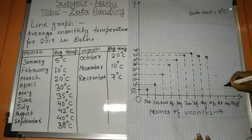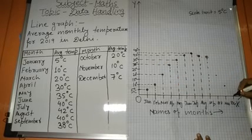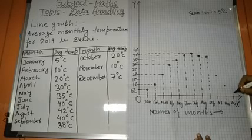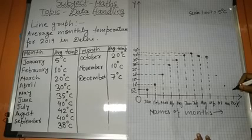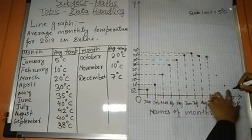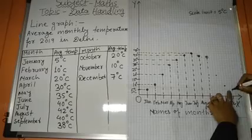Then, November month, 10 degrees. And December month, 7 degrees. Again, it will go between 5 and 10. So, 7 degrees, it will come somewhere here.